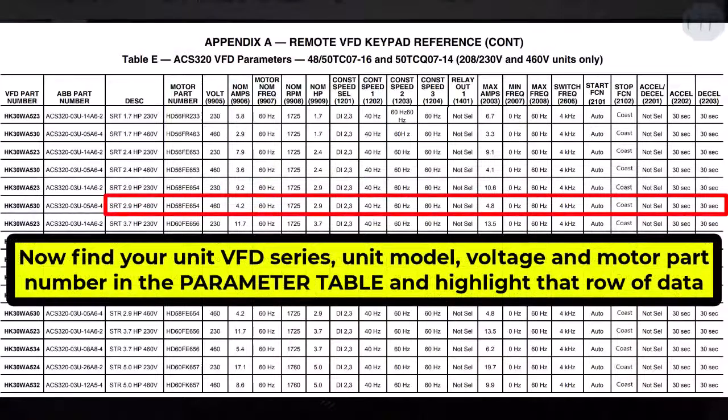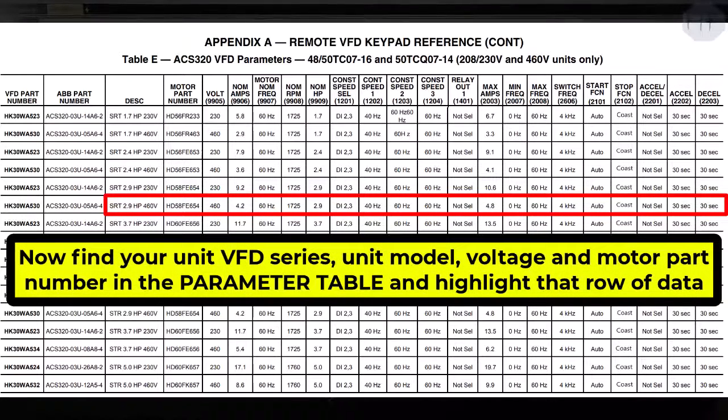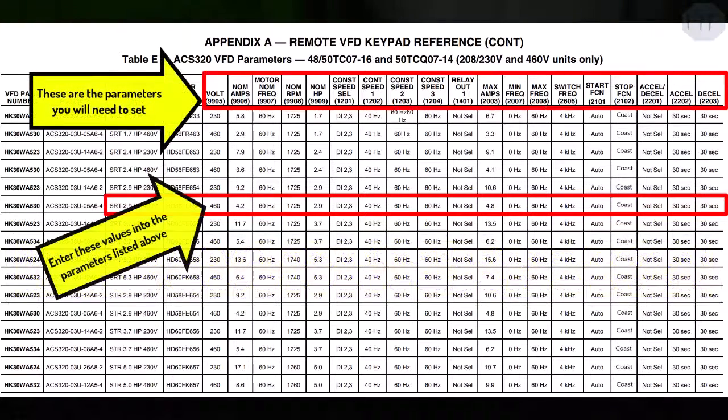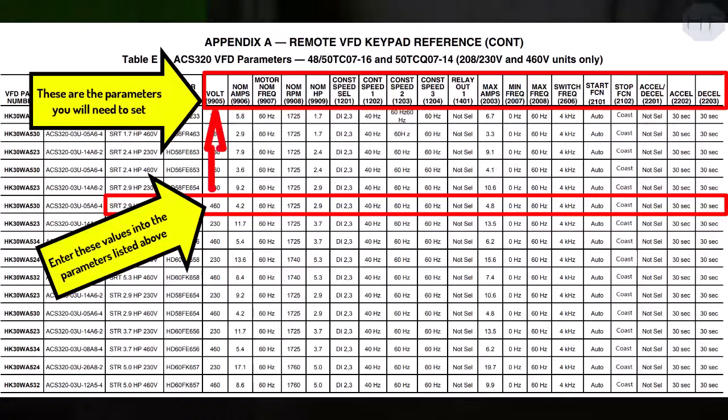Now find your unit VFD series, unit model, voltage and motor part number in the parameter table and highlight that row of data. The top row of the spreadsheet table lists the parameter name and number. Your highlighted row of data is the value specific to your unit specifications that you will use to enter into each parameter above.